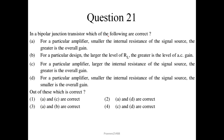Question number 21. In a bipolar junction transistor, for a particular amplifier the smaller the internal resistance of the signal source, the greater is the overall gain — this is correct. For a particular design, the larger the level of RL, the greater is the level of AC gain — this is also correct. So A and B are correct, and option 3 is the correct answer.